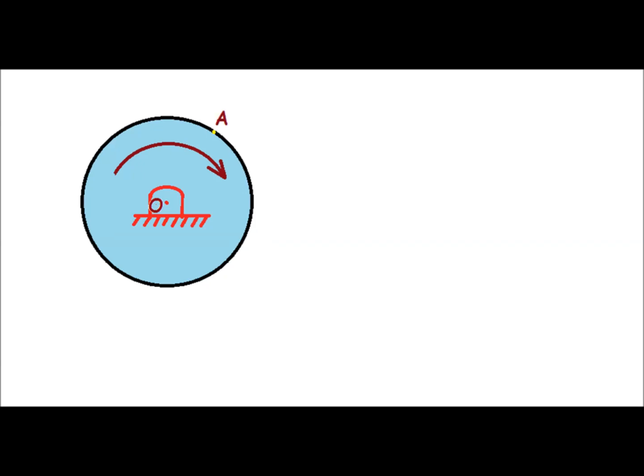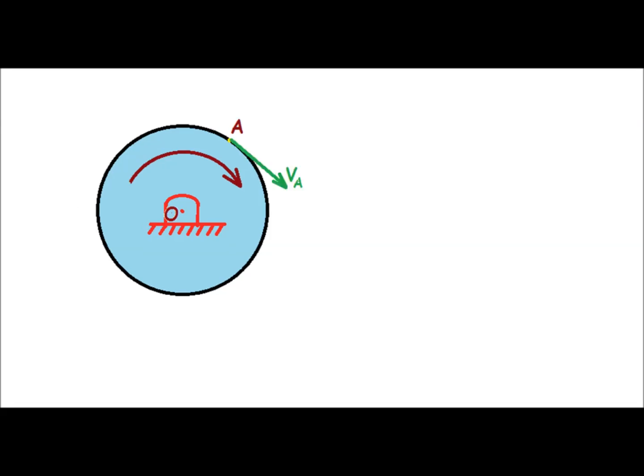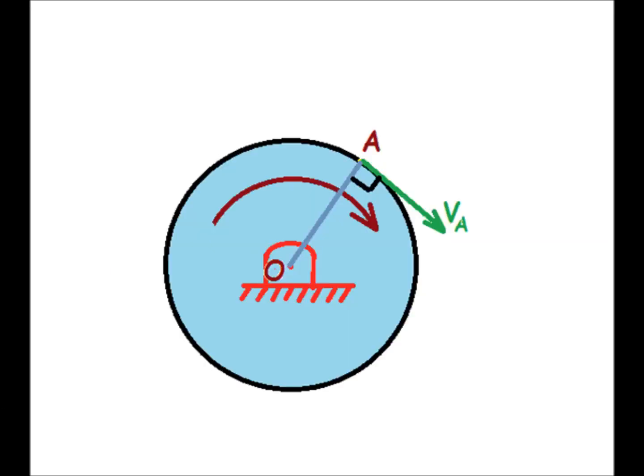Consider point A on the periphery of the disk. We are interested in velocity at point A. Velocity at point A will be tangential to the circular path traced by A and will be in the direction shown on the screen. That direction is dependent on the sense of rotation of the disk.